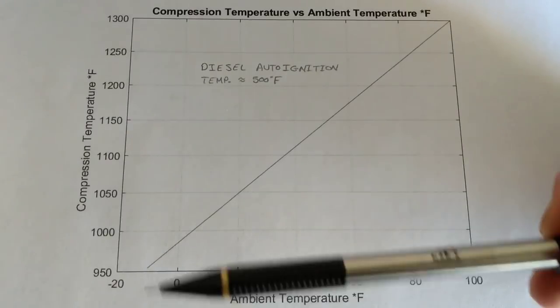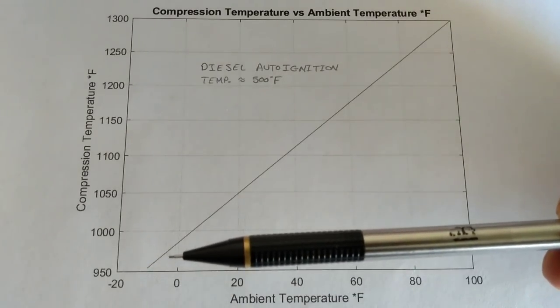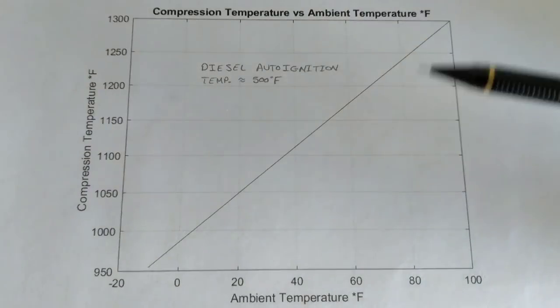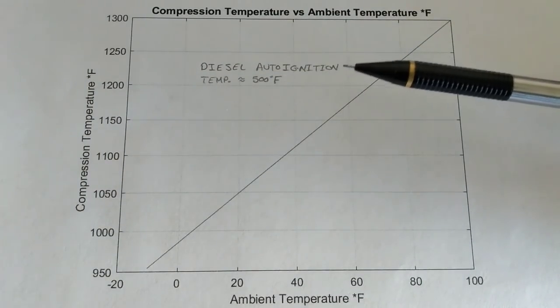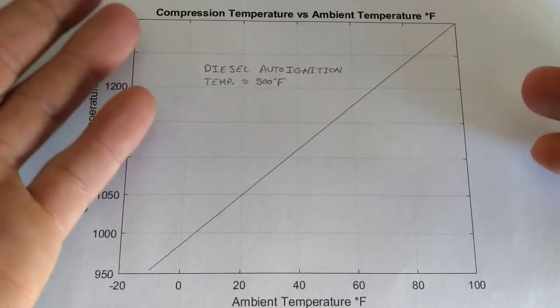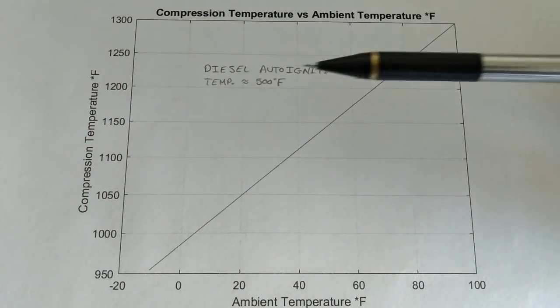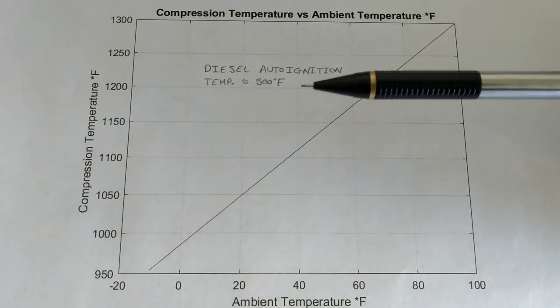But, as you can see here, our lowest temperature at approximately 10 degrees below zero is about 960 Fahrenheit, and that's way above the auto-ignition temperature of diesel. So, what's going on here? There's got to be more to the story. And so, that is what we're going to delve into, and we're going to see if we can figure out more of what is going on.